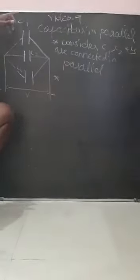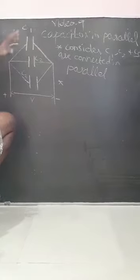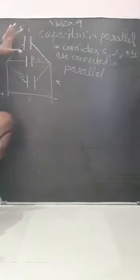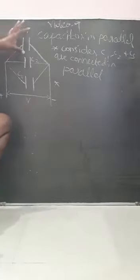The second point: across each capacitor, when it is connected in the form of series, charges remain the same and potential is different. That is opposite here when it is connected in parallel. When capacitors are connected in parallel, charge is different and potential is same.